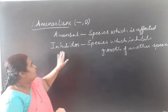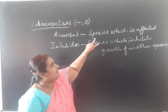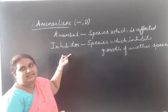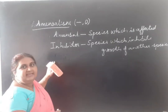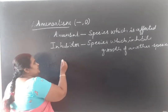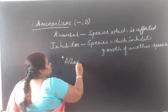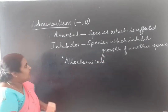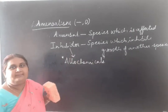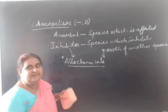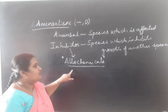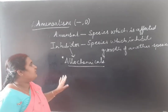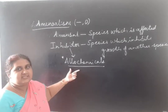How does the inhibitor species do this? The inhibitor species produces some special chemicals called allelochemicals. By producing these allelochemicals, it does not allow the other species to live, or it kills the other species so they cannot grow near the inhibitor species.